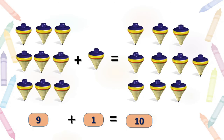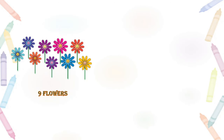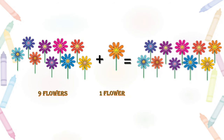Let us go through some more examples. Here you can see flowers — they are 9 in number. So, 9 flowers plus 1 flower. We added 1 flower to 9 flowers, and they give us — how many flowers? Please count. Very good — 10 flowers! We add 1 to 9, and that gives us 10 flowers.